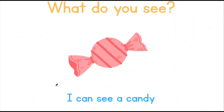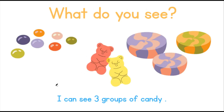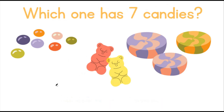So what do you see? I can see a pink candy, can you? 2, 8. What do you see now? I can see 3 groups of candy. Which one has 7 candies?